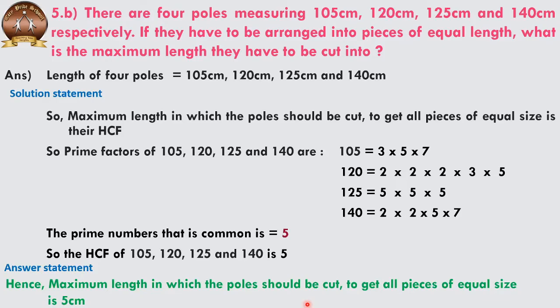The maximum length into which the poles should be cut to get all pieces of equal size is 5 cm. So when you cut the poles into 5 cm pieces, all the pieces will be of equal size. I hope this is clear to everyone.